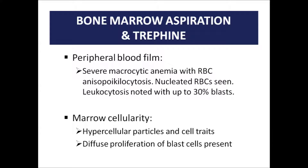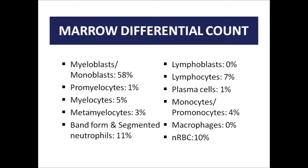As for the marrow cellularity, it shows hypercellular particles and cell trails, and there are also diffuse proliferations of blast cells present. The marrow differential count shows that myeloblasts or monoblasts have a higher percentage of 58%. There are 1% promyelocytes, 5% myelocytes, 3% metamyelocytes, 11% band cells and segmented neutrophils. There are no lymphoblasts, but there are 7% lymphocytes, 1% plasma cells, 4% monocytes or promonocytes, and 10% nucleated red blood cells.